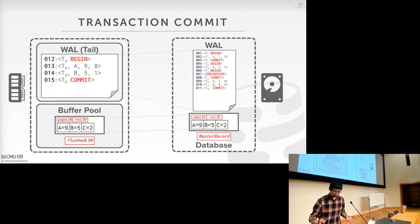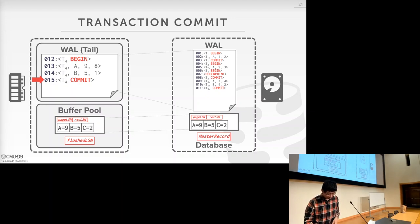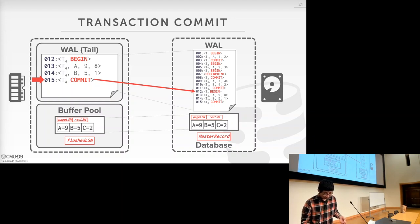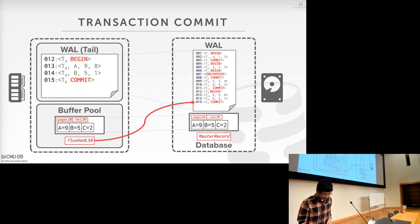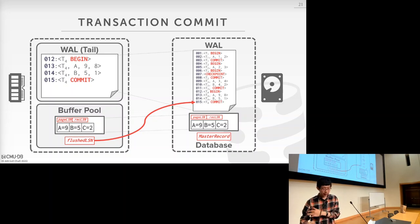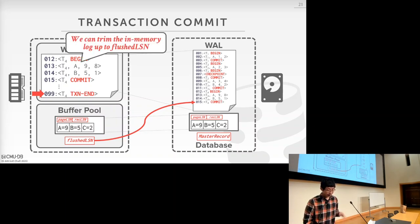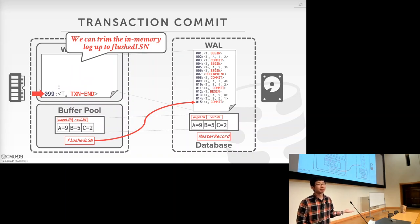To illustrate with a simple example: transaction T4 begins, does a modification, and then commits. When this transaction commits, it flushes all log records containing this transaction onto disk, and updates the flushed LSN to 15, the latest log record. After a while, once it finishes all additional tasks related to those log records, it appends the transaction end record at the end of the write-ahead log tail, and then can blow away all the log records in memory.